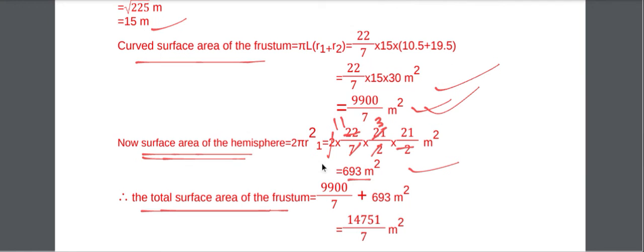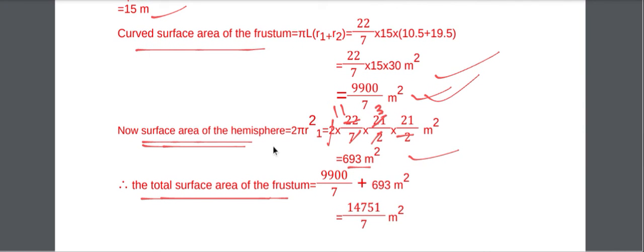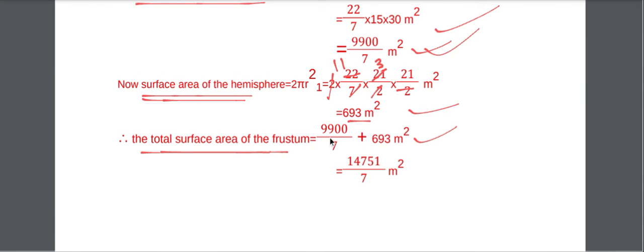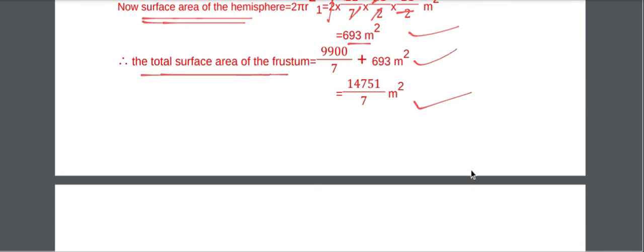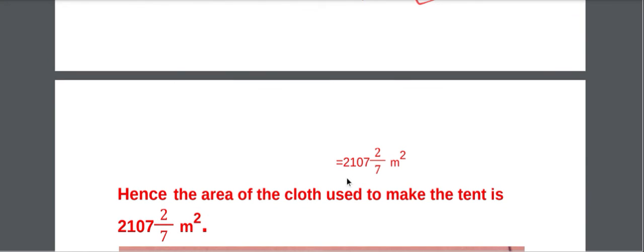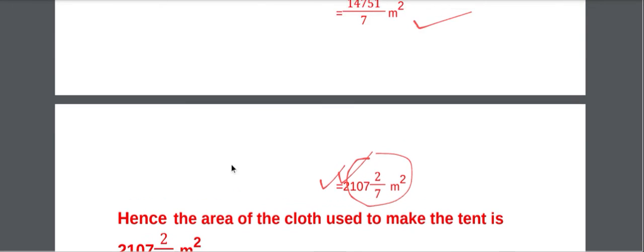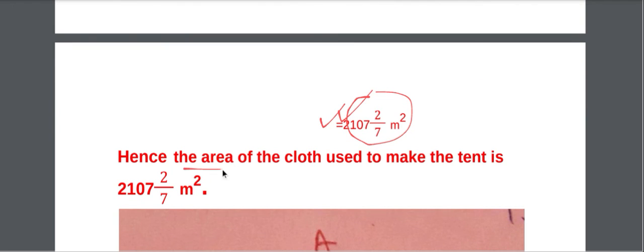Total surface area = CSA of frustum + CSA of hemisphere = 9900/7 + 693. Taking LCM as 7: (9900 + 4851)/7 = 14751/7 = 2107 and 2/7 meter square. Hence, the area of the cloth used to make the tent is 2107 2/7 meter square.